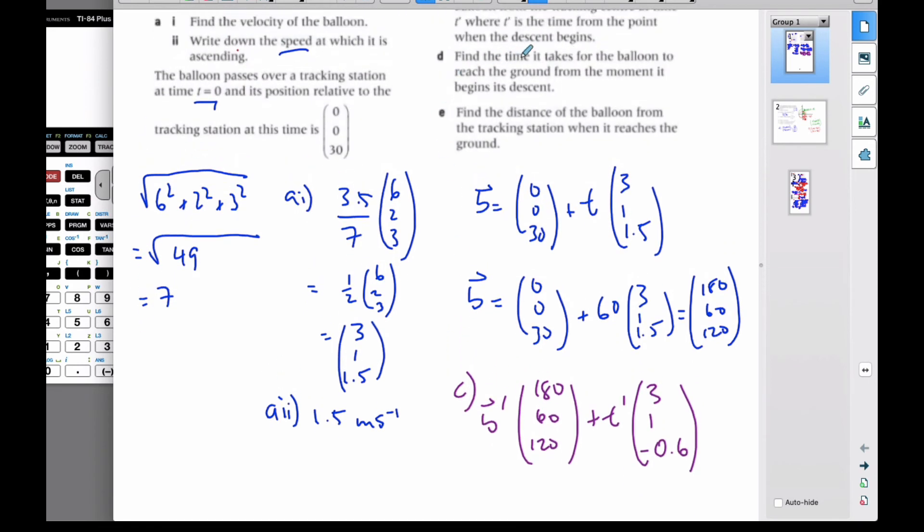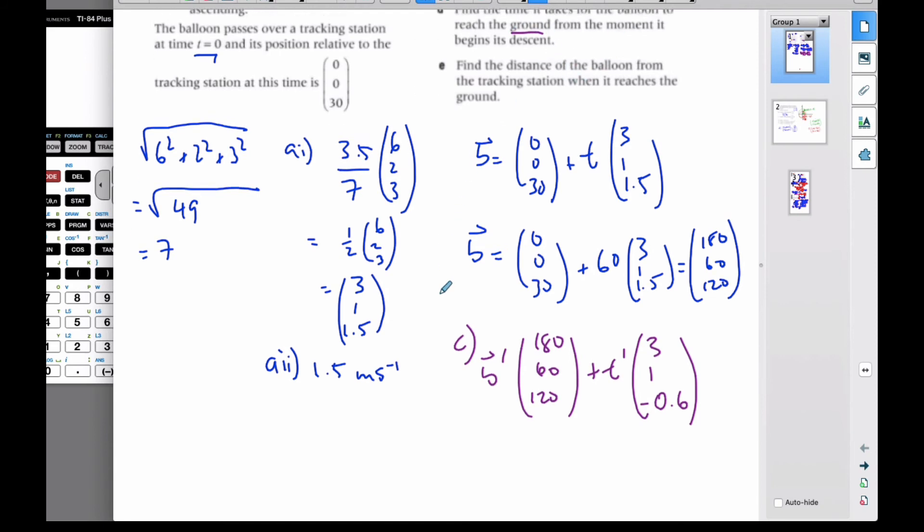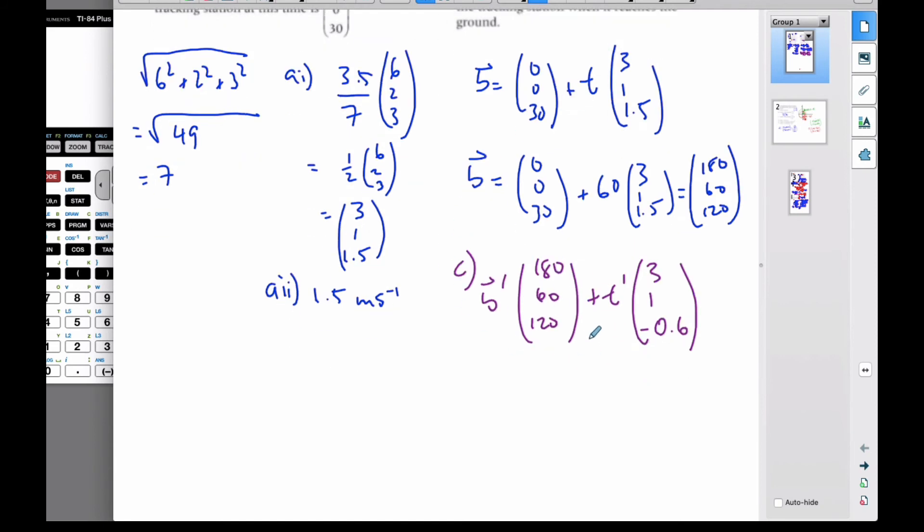Part d says, find the time it takes for the balloon to reach the ground from the moment it begins to descend. For this vector, I want the z component, the ascend and descent component, to be 0. So I want 120 minus 0.6t equals 0. This gives me 120 equals 0.6t, so t is 200 seconds to reach the ground.